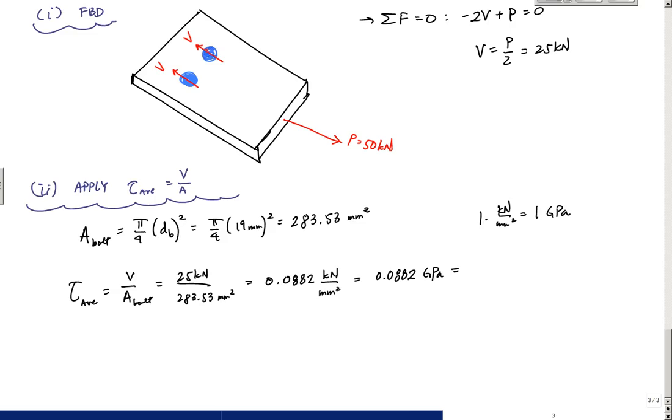And if I want to convert this into Megapascals, I multiply this number by 1000, and that would be the same as 88.2 Megapascals. And this is the average shear stress in each of my bolts.